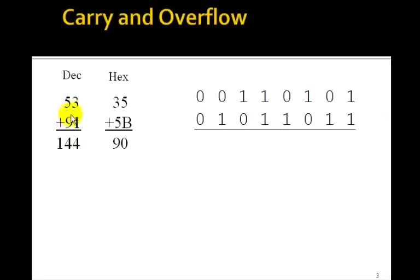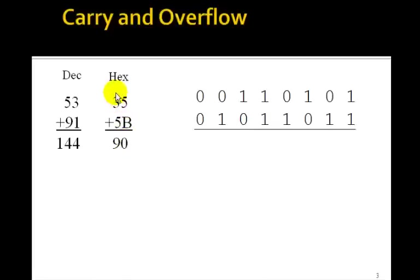Let's do another example. Suppose we add 53 to 91 — the answer is 144. In hex, 53 is 35 and 91 is 5B. B plus 5 is 16, giving 0 with a carry, and 90 hex is in fact 144.